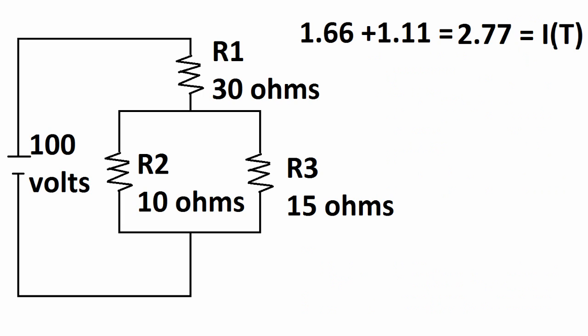To check our work, we can add the currents of resistor 2 and resistor 3, and it should give us the current total. So we take 1.66 plus 1.11, and this gives us 2.77 amps — and that is the current total. So we did it correctly.